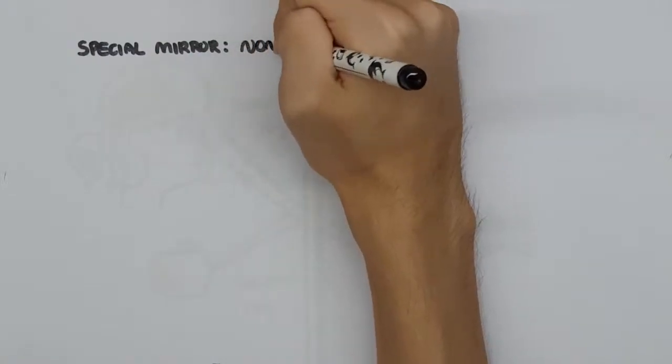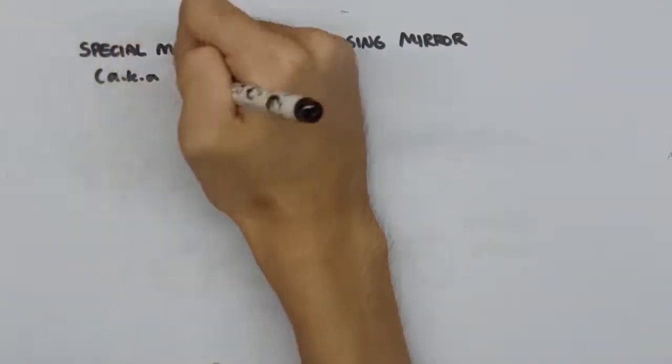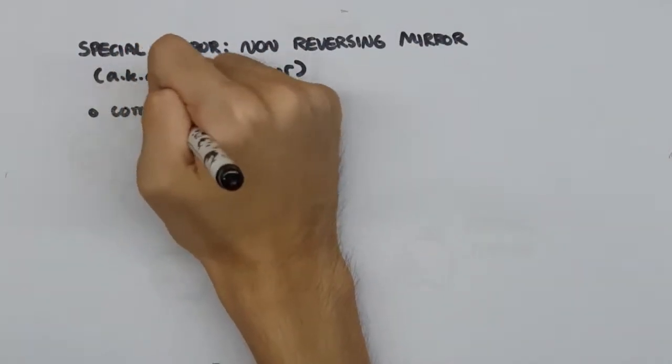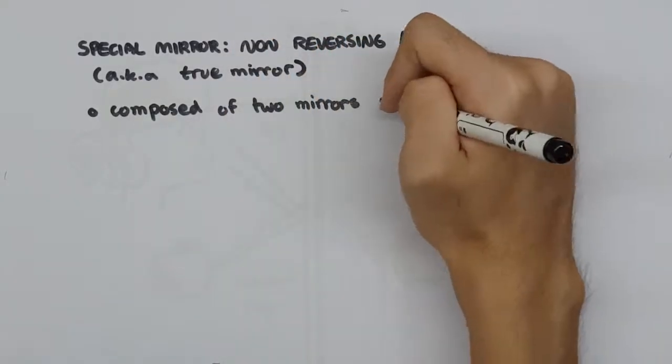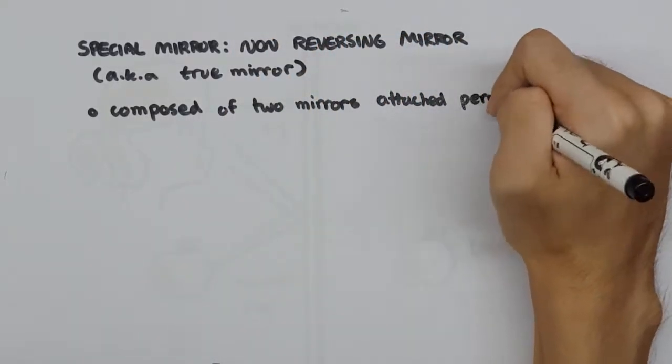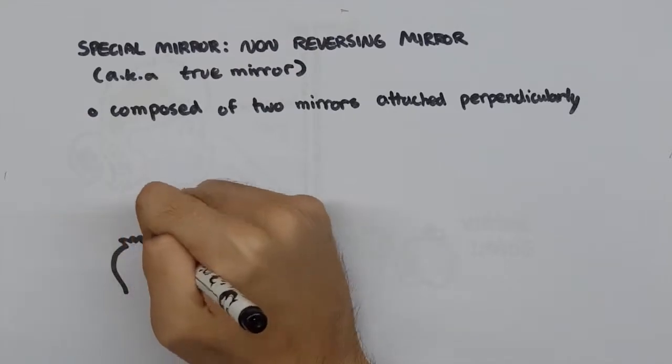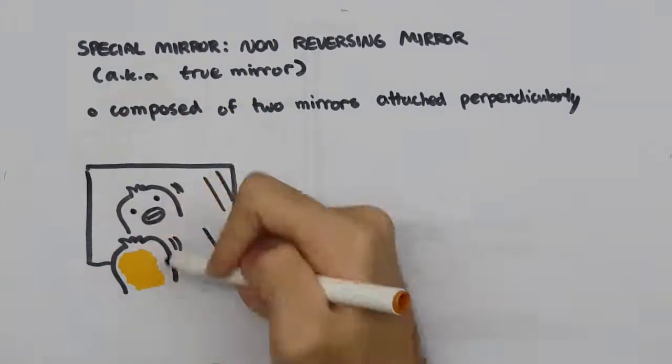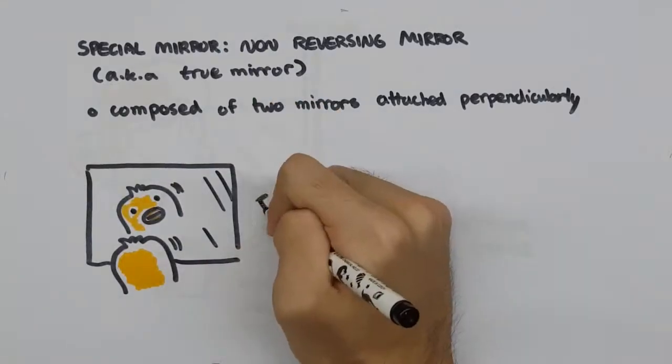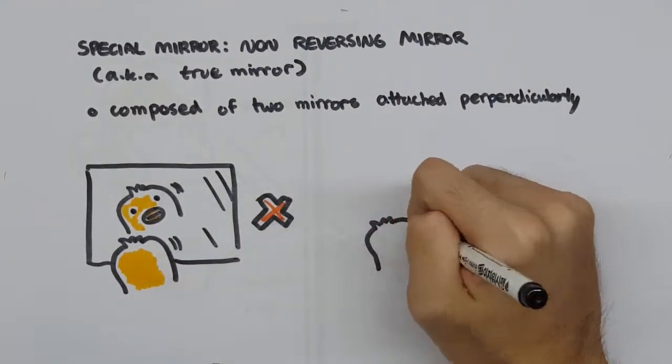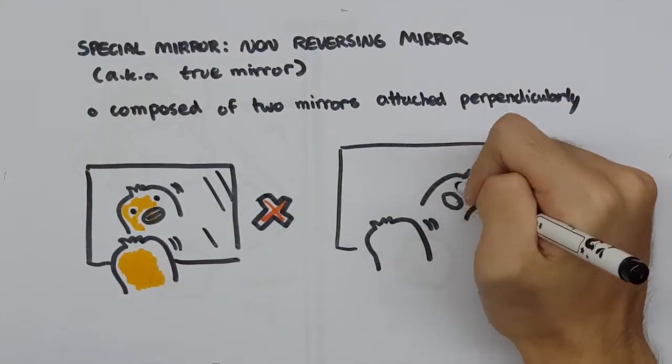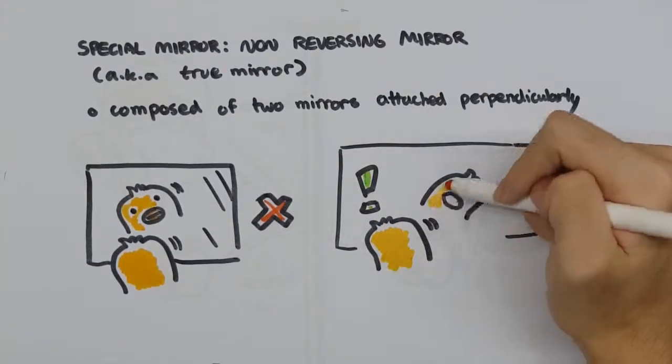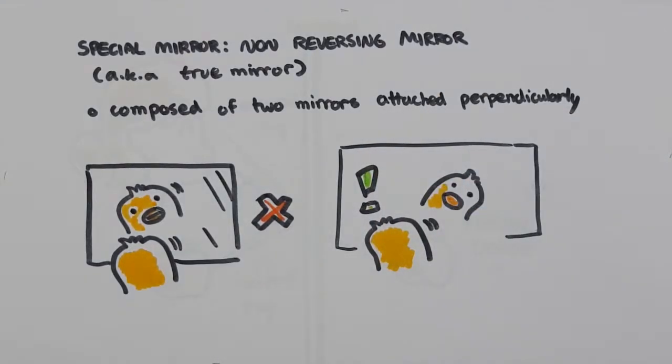There's a special kind of mirror called a non-reversing mirror, or a true mirror. It is a simple setup composed of two mirrors attached perpendicular to each other. And instead of showing a flipped image, it shows an object as it would be seen in the perspective of the mirror. Instead of looking like this, it would look like this. You would see yourself as others see you, which actually may feel very odd.